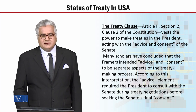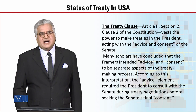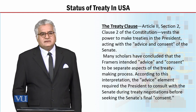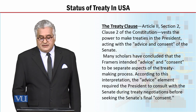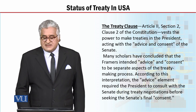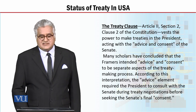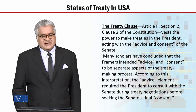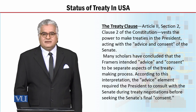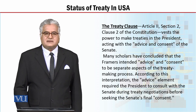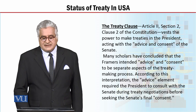Now let's move on to discuss the treaty clause as contained in the U.S. Constitution. Article 2, Section 2, Clause 2 of the U.S. Constitution states that the power to make treaties vests in the president acting with the advice and consent of the Senate. So the president is made subordinate to the Senate — if the Senate approves it with a two-third majority, the president can move on to sign the treaty; otherwise, the president cannot sign the treaty.